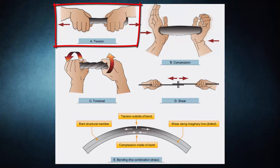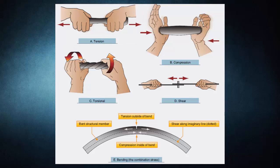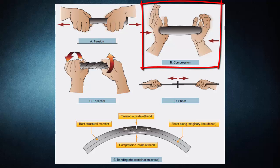Tension is the stress that resists a force that tends to pull something apart. The engine pulls the aircraft forward, but air resistance tries to hold it back — the result is tension, which stretches the aircraft. The tensile strength of a material is measured in pounds per square inch and is calculated by dividing the load required to pull the material apart by its cross-sectional area in square inches. Compression is the stress that resists a crushing force, also measured in pounds per square inch, and tends to shorten or squeeze aircraft parts.